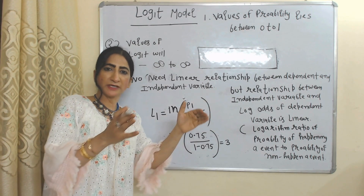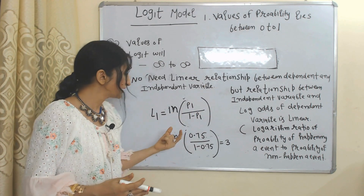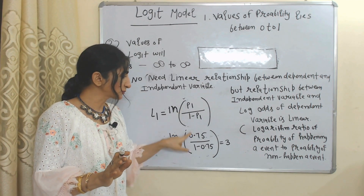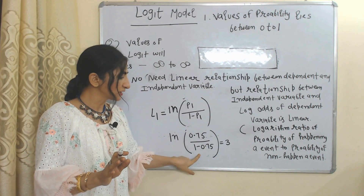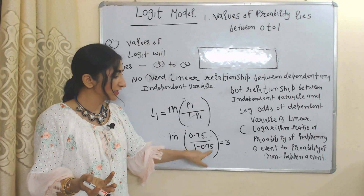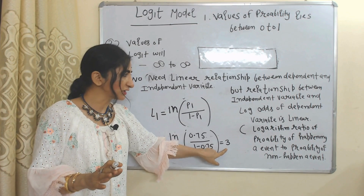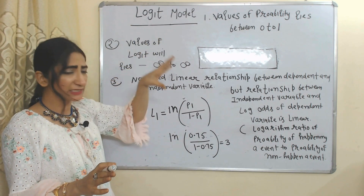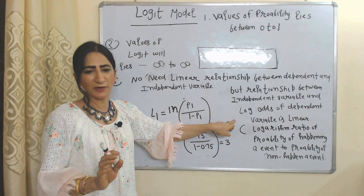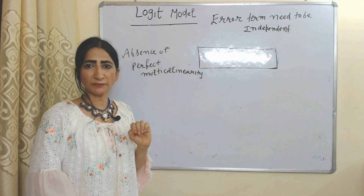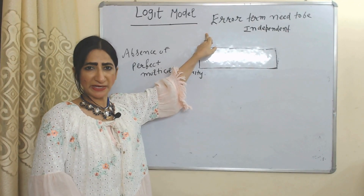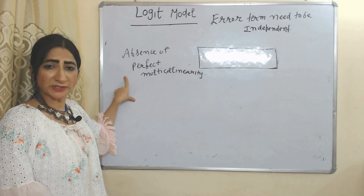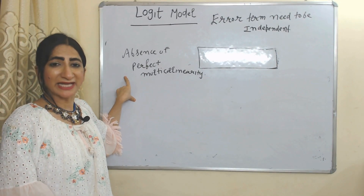The log odds of the dependent variable means the logarithm of the probability of an event happening divided by the probability of it not happening. For example, if the probability of an event happening is 0.75, then the probability of it not happening is 1 minus 0.75 = 0.25. The ratio is 3, and the log of 3 gives the log odds. There should be a linear relationship between the independent variable and the log odds. The error term must be independent — the error term of one period should not be related to that of another period — and there should be no perfect multicollinearity among independent variables.